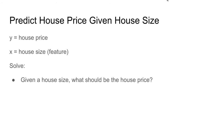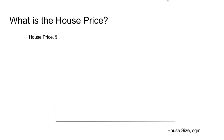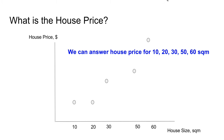In our problem, we are going to predict the house price, which is Y, given the house size, which is a feature called X. If we were to ask what is the price of a 50 square meter house, we have no answer because we don't have any data. If we go outside and collect some data, then we can answer the house price for 10, 20, 30, 50, 60 square meters, because we have those data points.